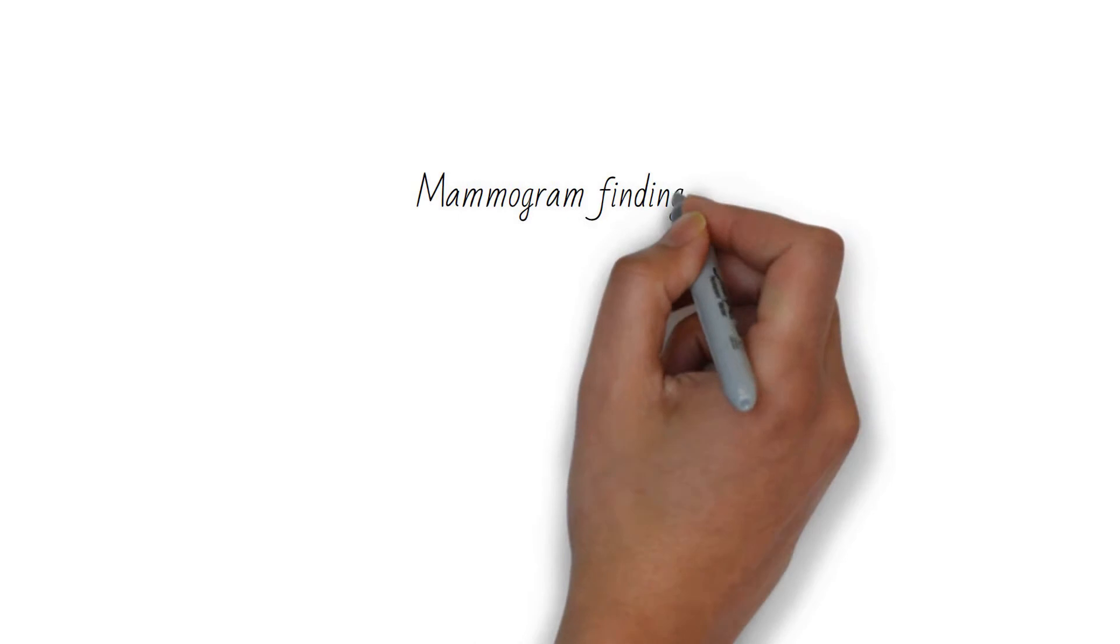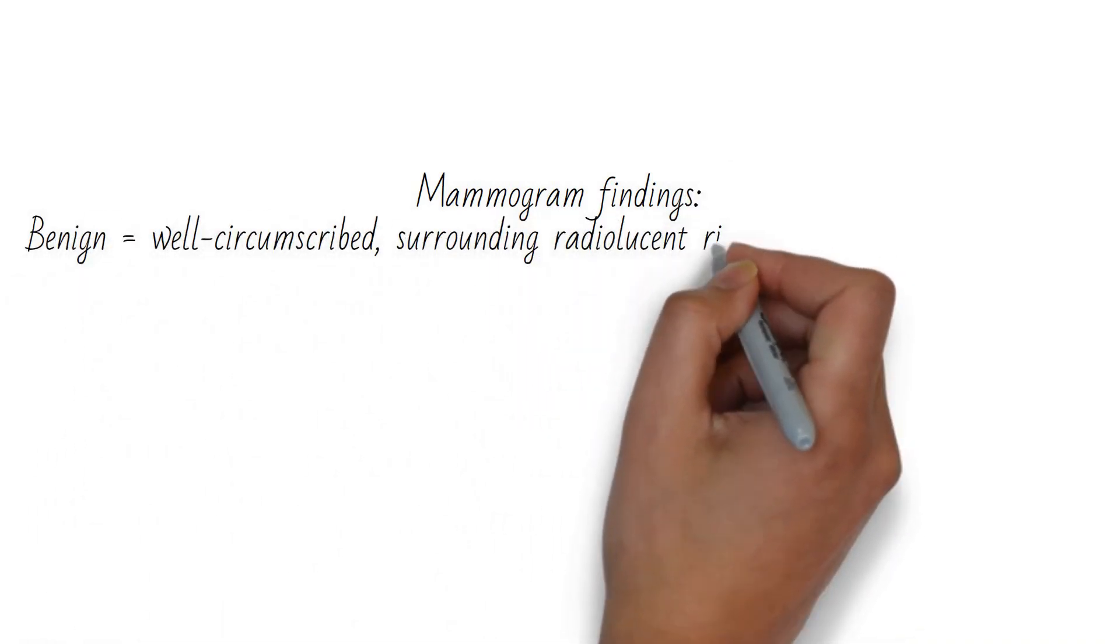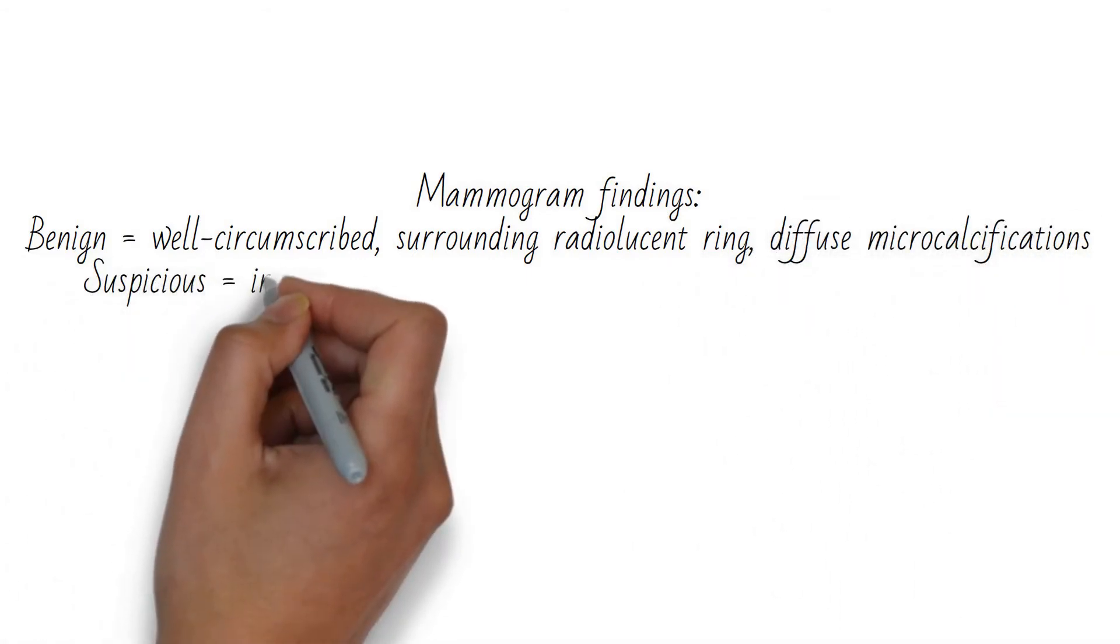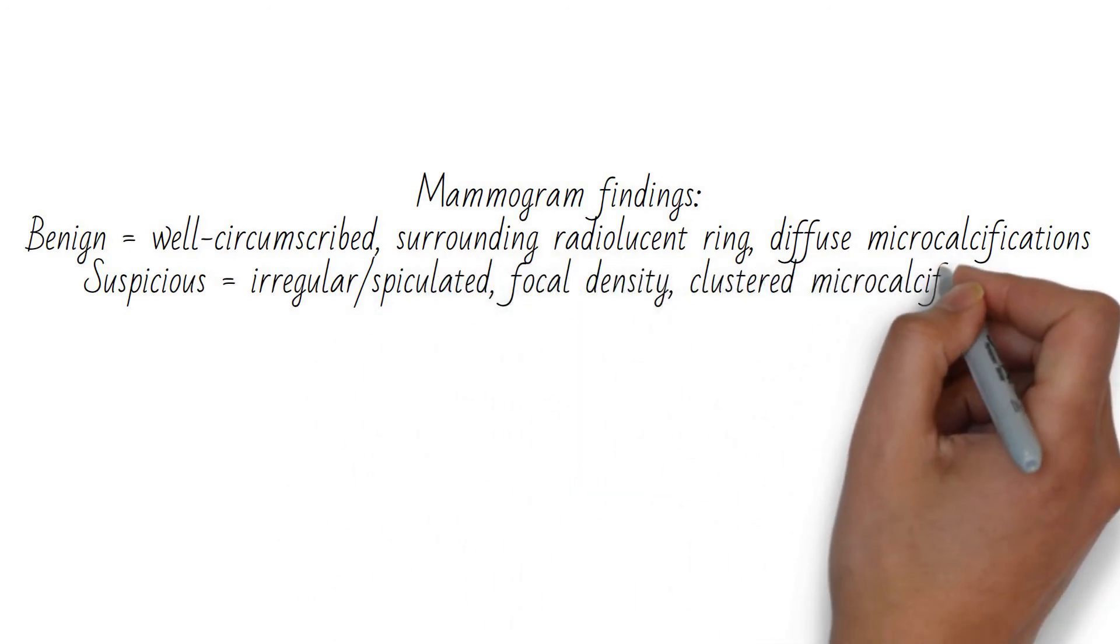In general, benign mammogram findings are a well-circumscribed mass with a surrounding radiolucent ring and diffuse microcalcifications. Suspicious findings are an irregular or spiculated focal density with clustered microcalcifications.